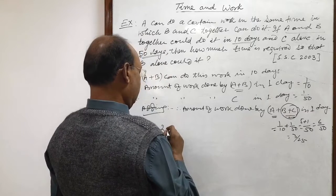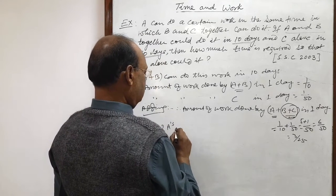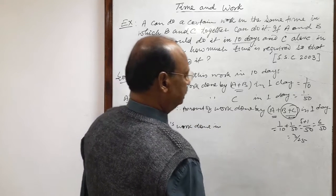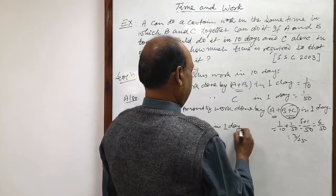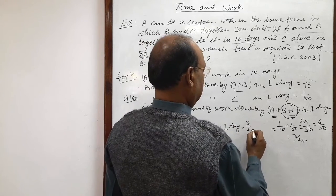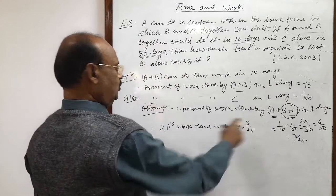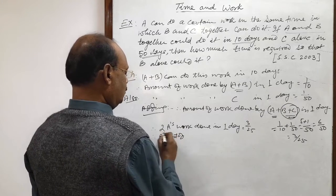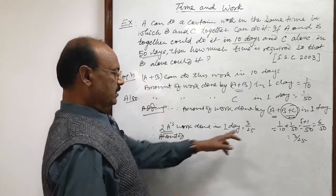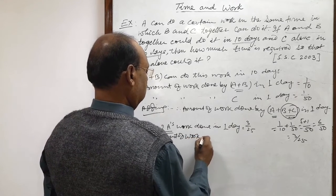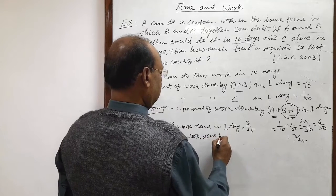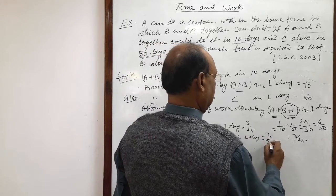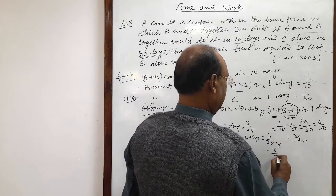So 2 times of A's work done in 1 day: 3 by 25 dividing by 2. Therefore, amount of work done by A in 1 day is equal to 3 by 2 into 25 is equal to 3 by 50.